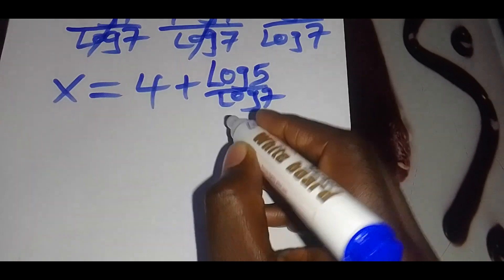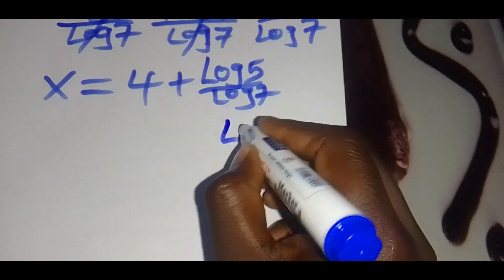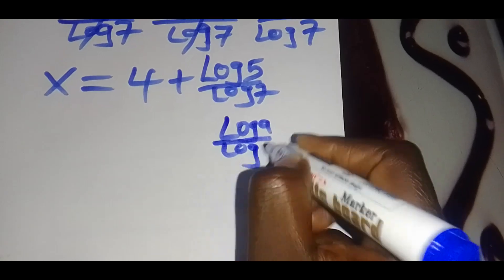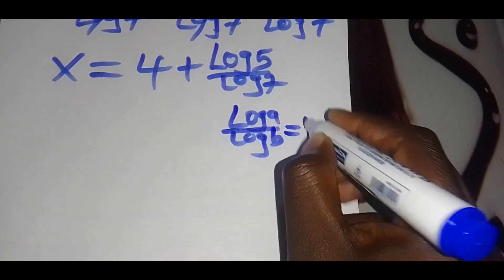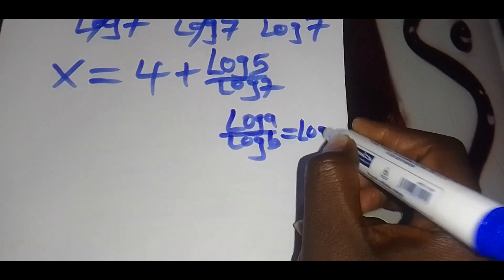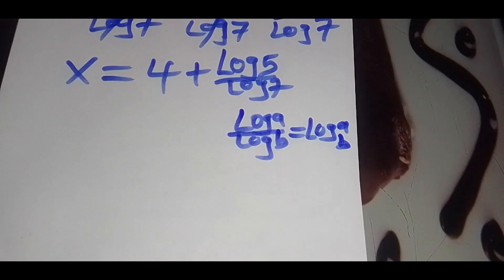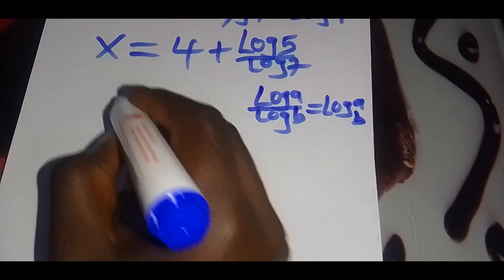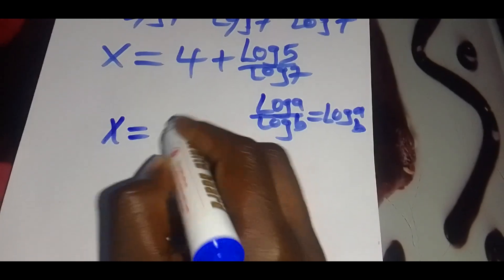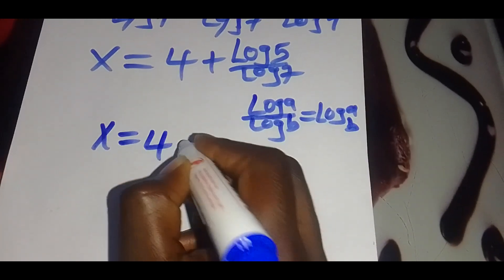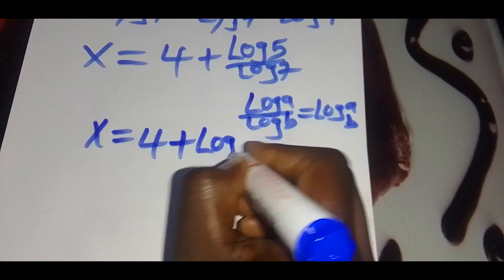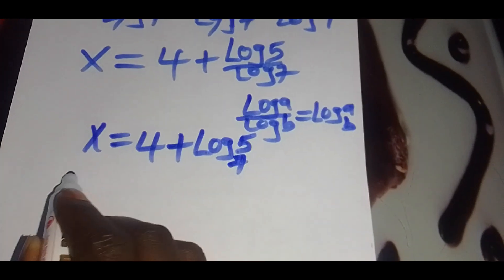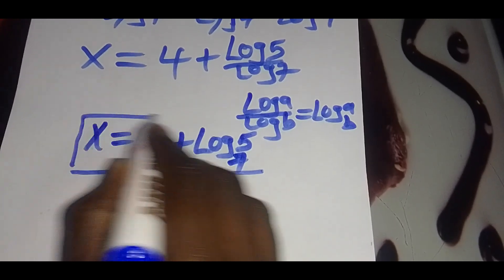Using the change-of-base property, which states that log a divided by log b equals log a to base b, we now have x equals 4 plus log 5 to base 7. So this is our value of x.